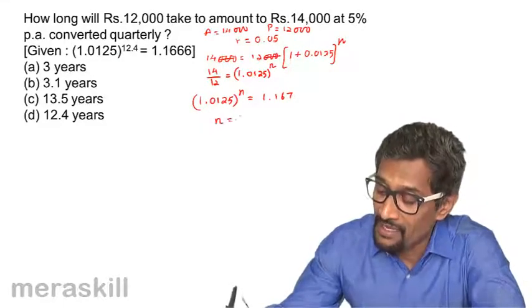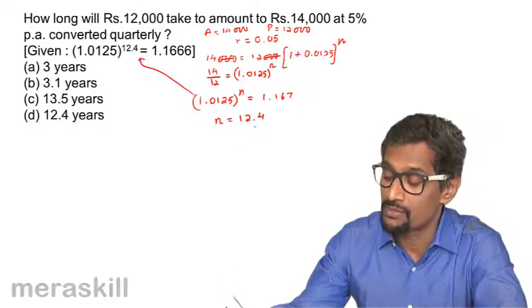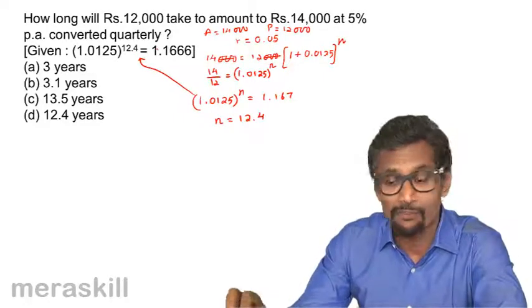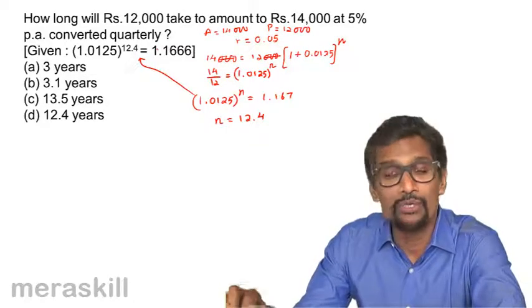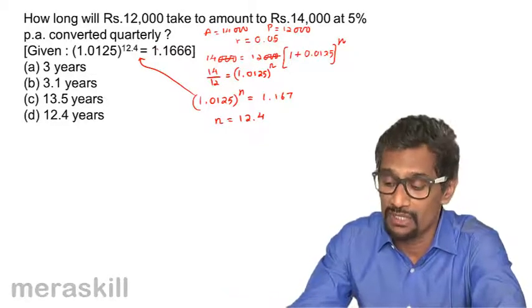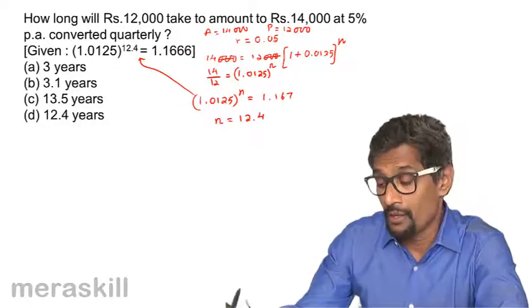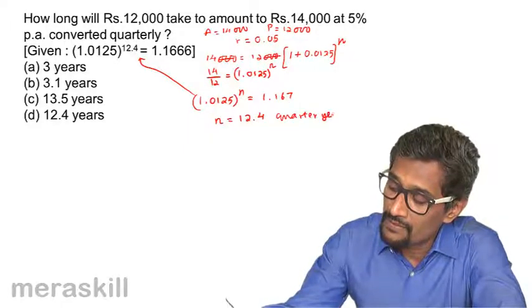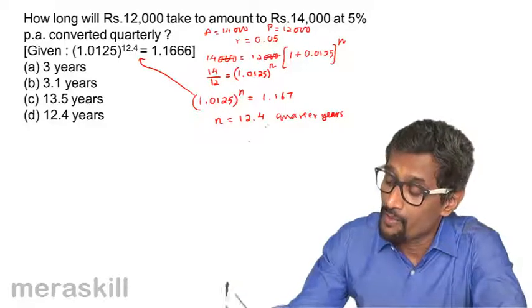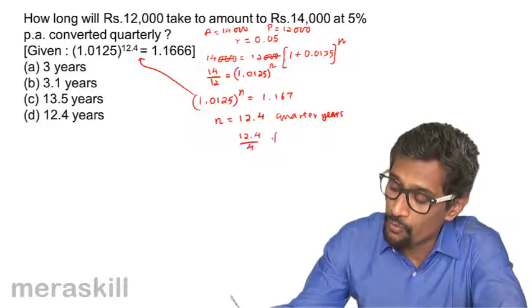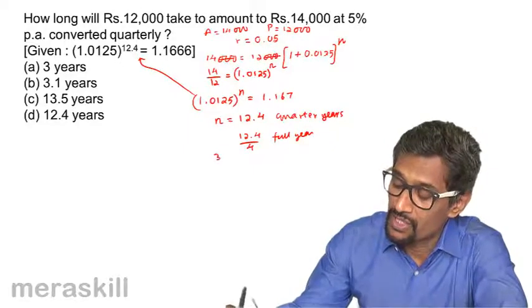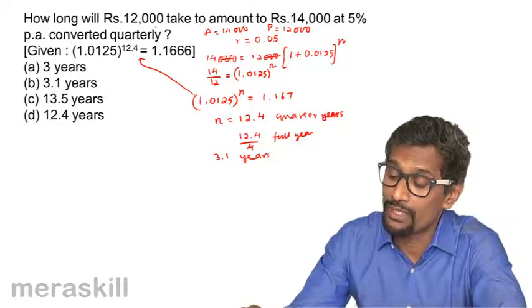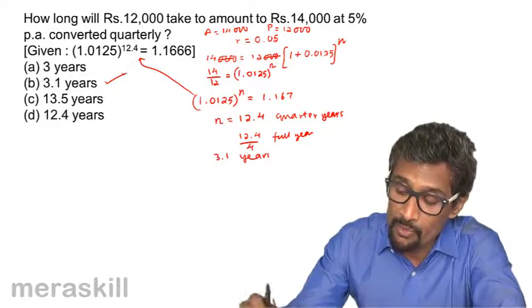That means N is equal to 12.4 if you compare the terms. So N turns out to be 12.4. Just in case this information is not given, you have to keep pressing 1.0125 equals N number of times to see which N gives this. So N is 12.4, but this means there are 12.4 quarter years. Therefore the number of full years will be 12.4 divided by 4, which is 3.1 years.